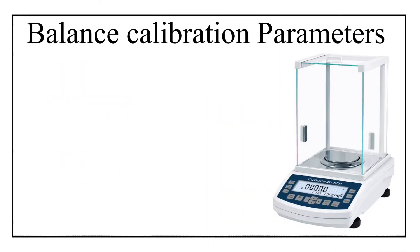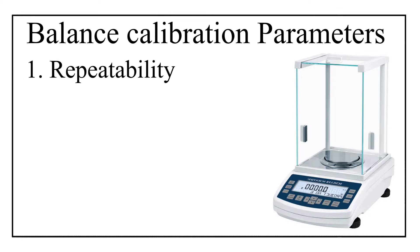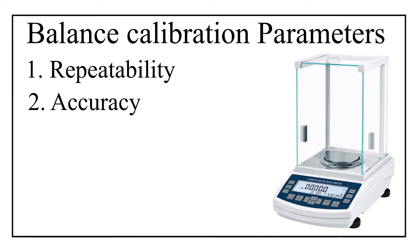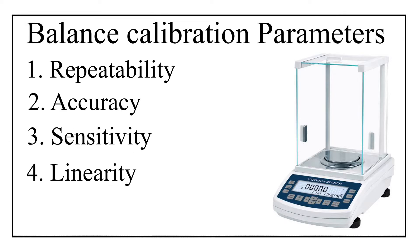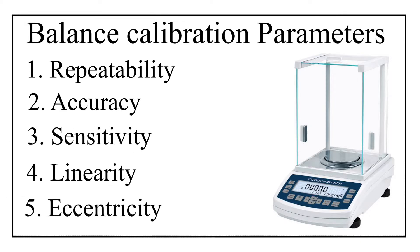A typical balance is calibrated with the help of five calibration parameters: number one, repeatability; number two, accuracy; number three, sensitivity; number four, linearity; and number five, eccentricity. These are the five main calibration parameters of a balance, which are used globally by all pharma companies.